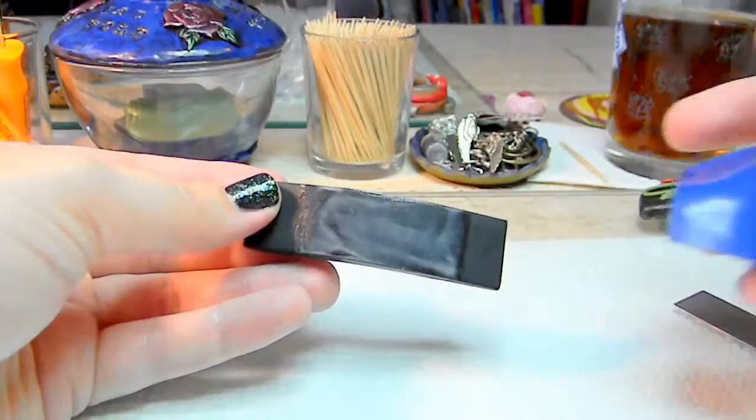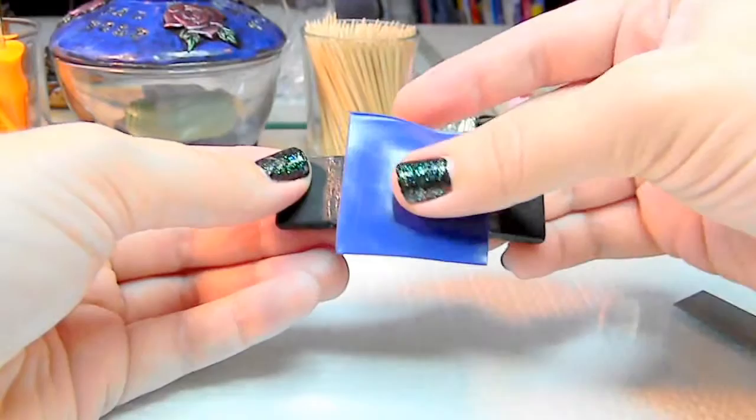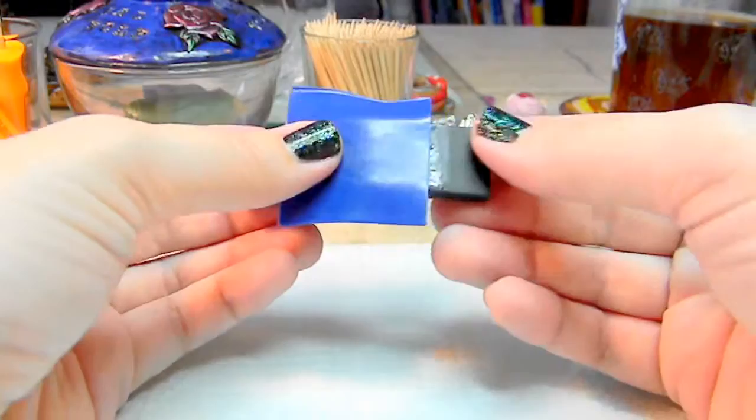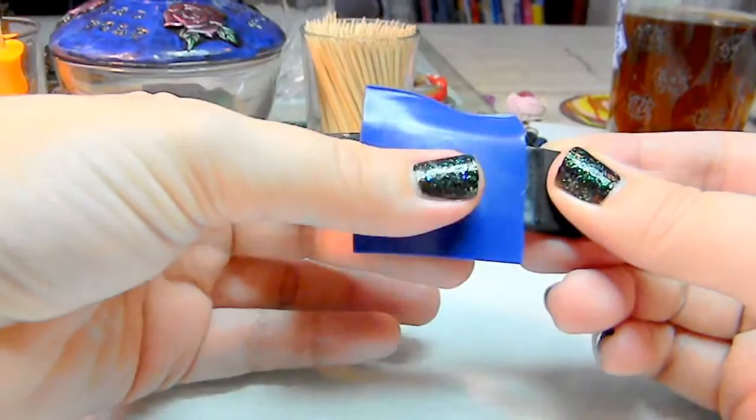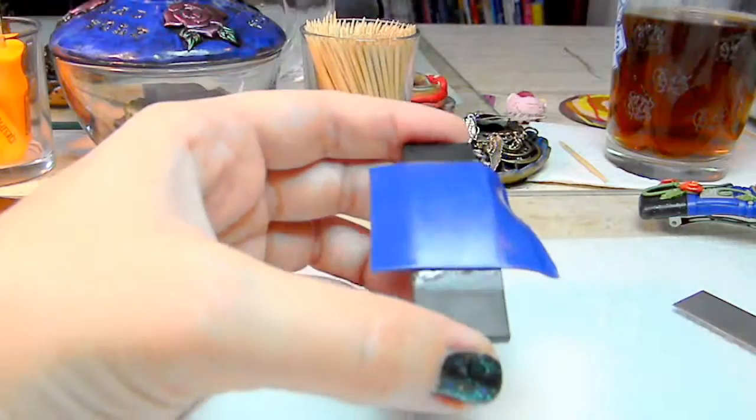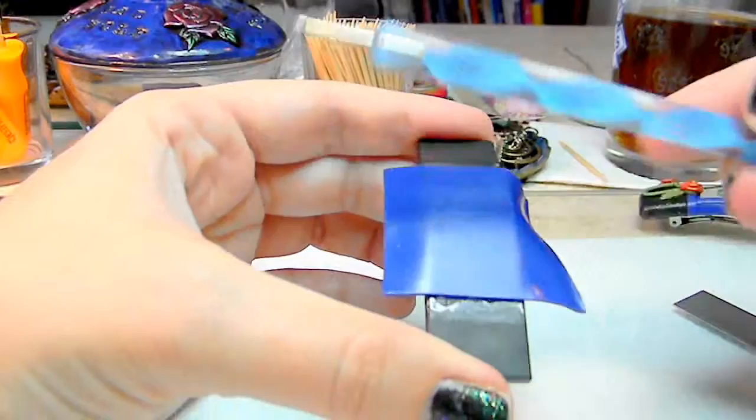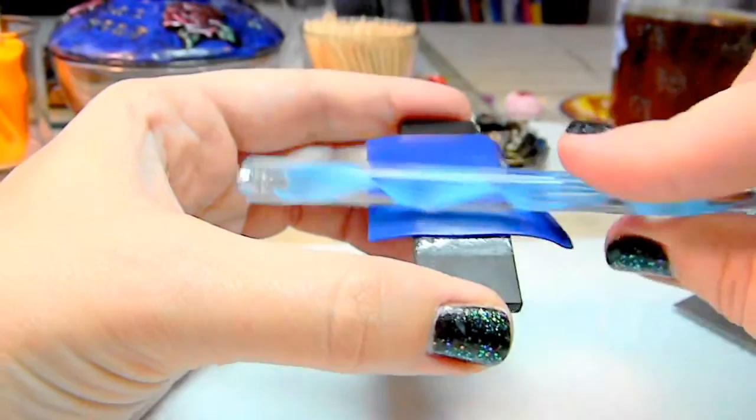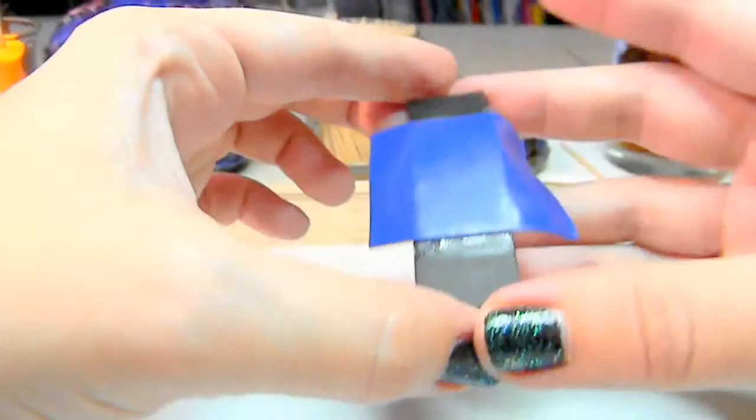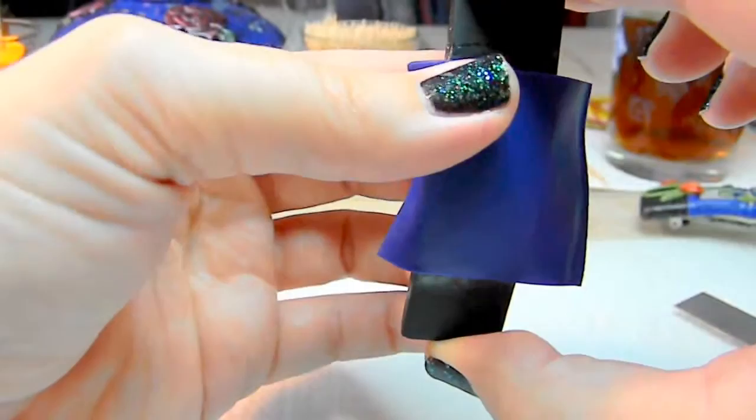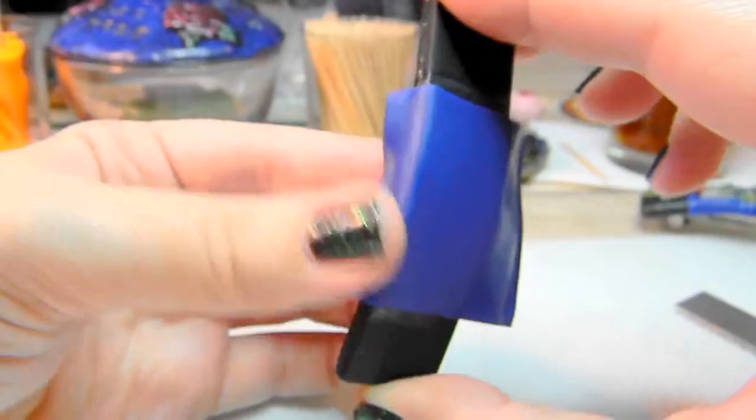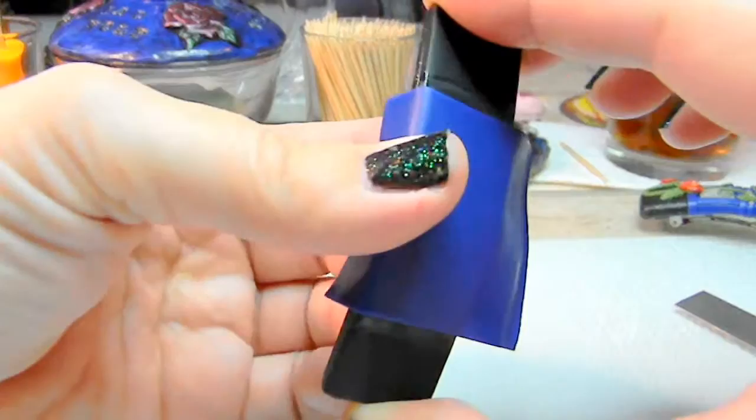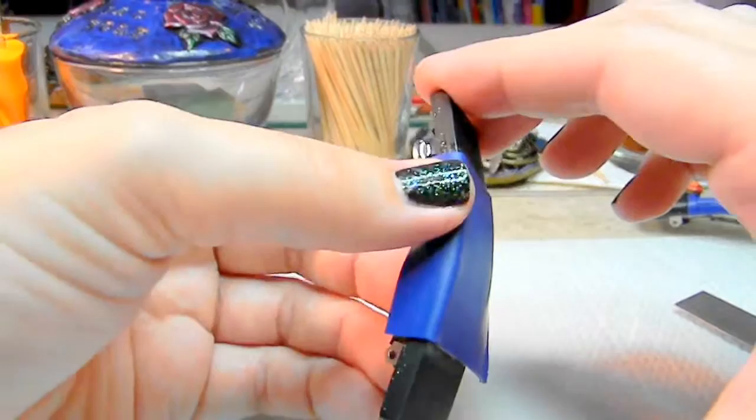And you're just going to lay this down. You can do it kind of catty-cornered there if you prefer your TARDIS to be on its side. I kind of like the way that I did the other one. And you're just going to gently push this down, trying to make sure that you don't get any air bubbles, any large air bubbles anyway.